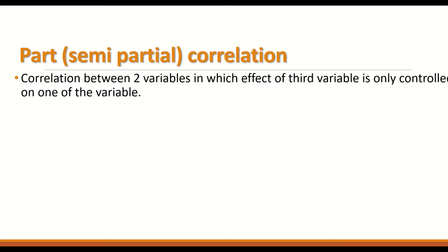Semi-partial correlation is a test used to find out the correlation between two variables in which the effect of a third variable is only controlled on one of the variables. That is, if you have variable number one and variable number two, and you want to do a correlation between them, but you also have a third variable whose effect you want to exclude on only either variable one or variable two, but not both.